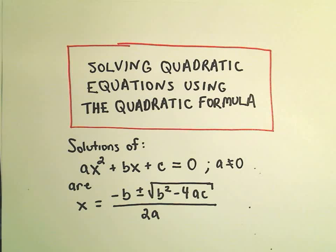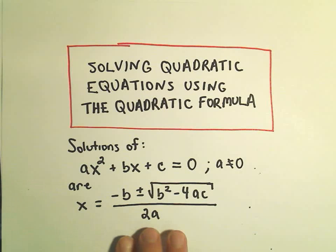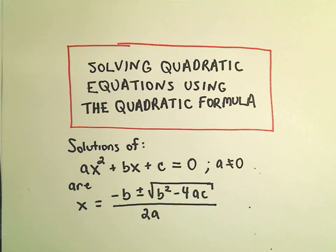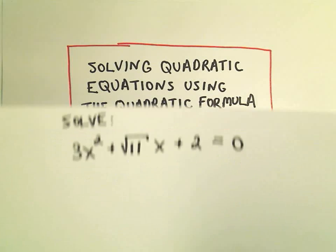In this video, I want to do another example of solving a quadratic equation using the quadratic formula. Here's our quadratic formula: x equals negative b plus or minus the square root of b squared minus 4ac, all over 2a.